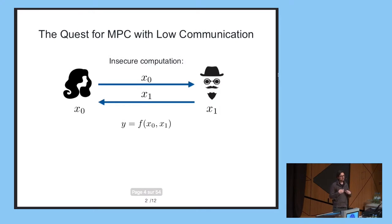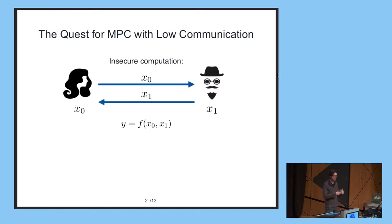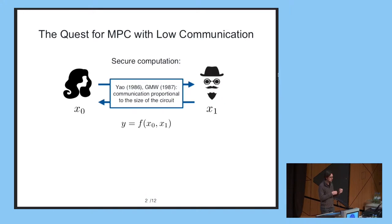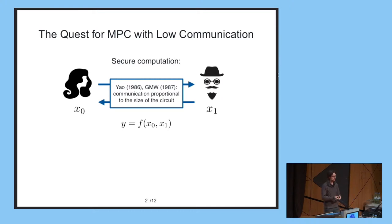If you don't care about security and you want to compute a function, it's easy to see that Alice and Bob only need to exchange their inputs, meaning that the communication required to insecurely compute a function is just the size of the inputs multiplied by the number of parties. In contrast, the first protocols for secure computation — the one by Yao in 1986 and the GMW protocol in 1987 — had a communication complexity proportional to the circuit size of the function.